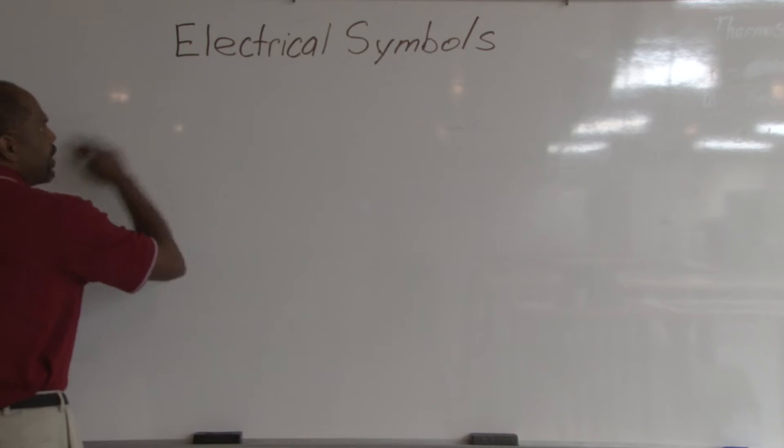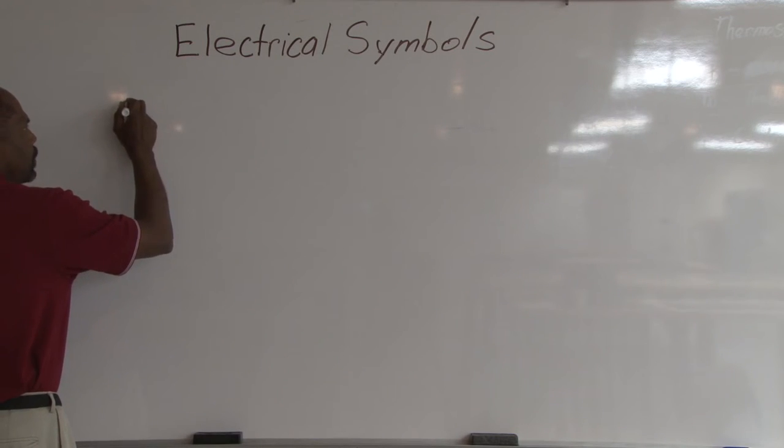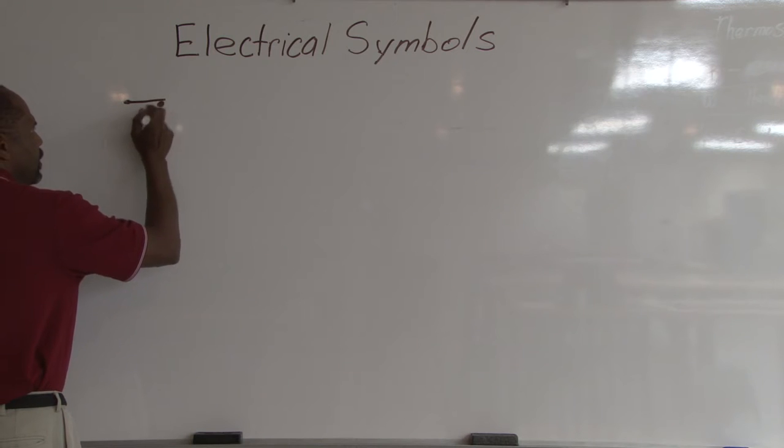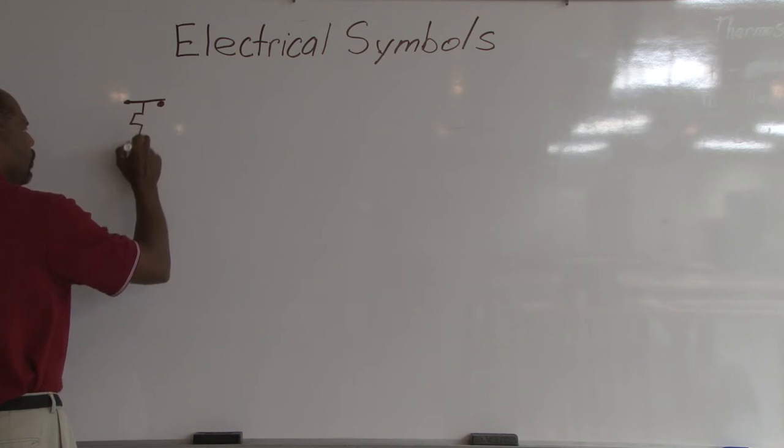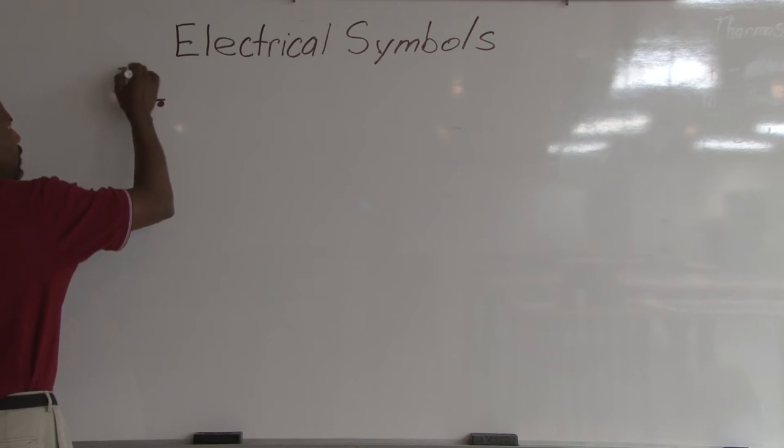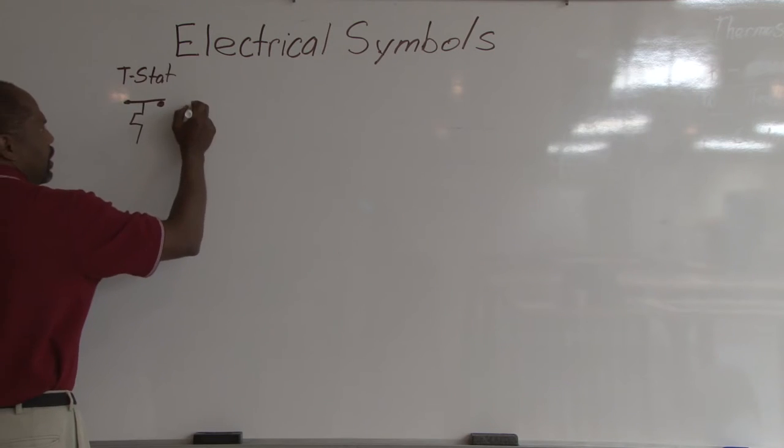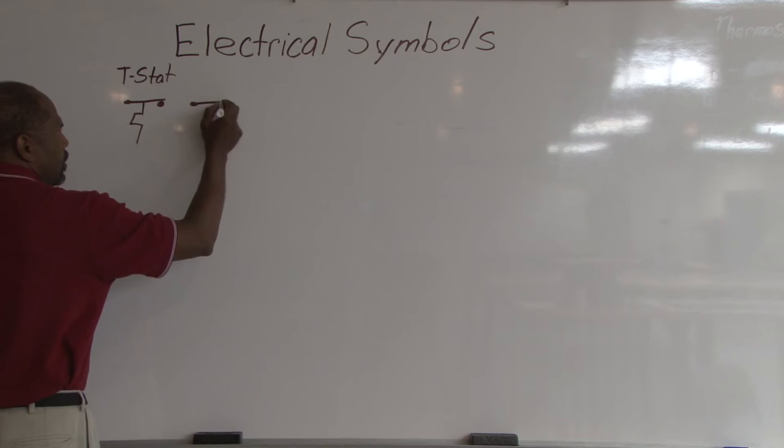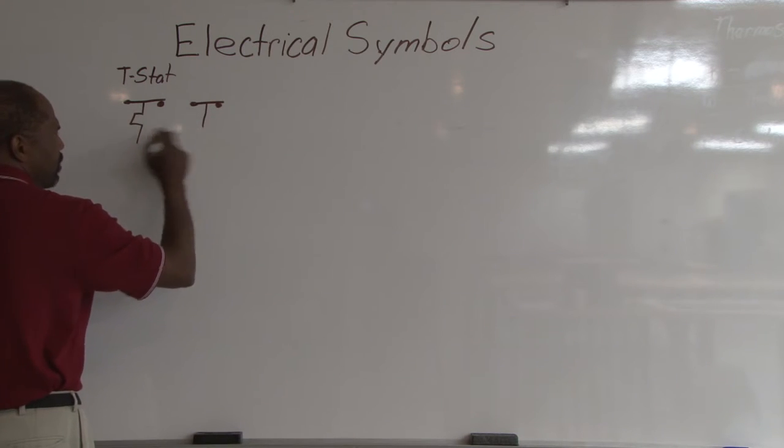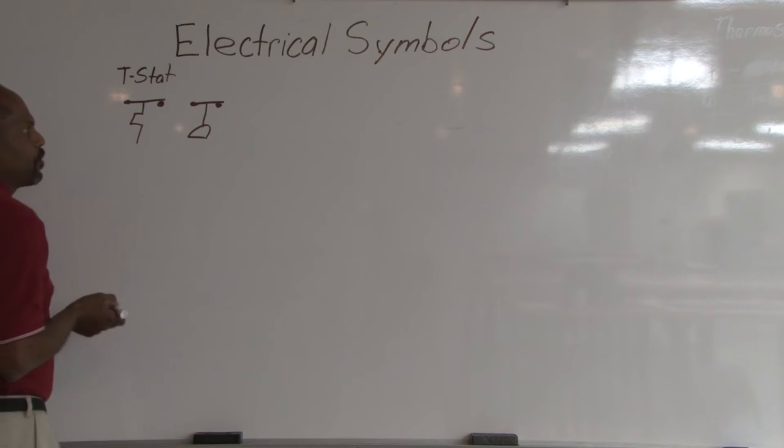In a circuit, I'm going to draw a few different symbols that we will see and how you will recognize that switch. This will be a thermostat. This is a pressure control. It looks like a thermostat, but it will have like a half circle.